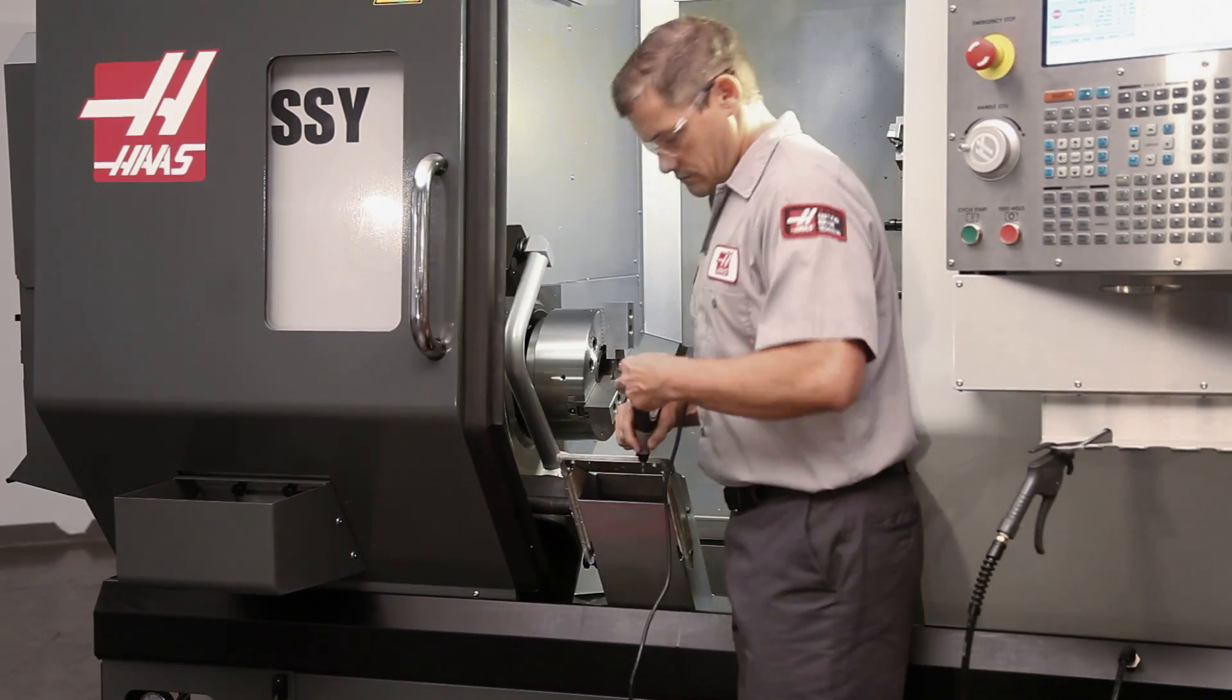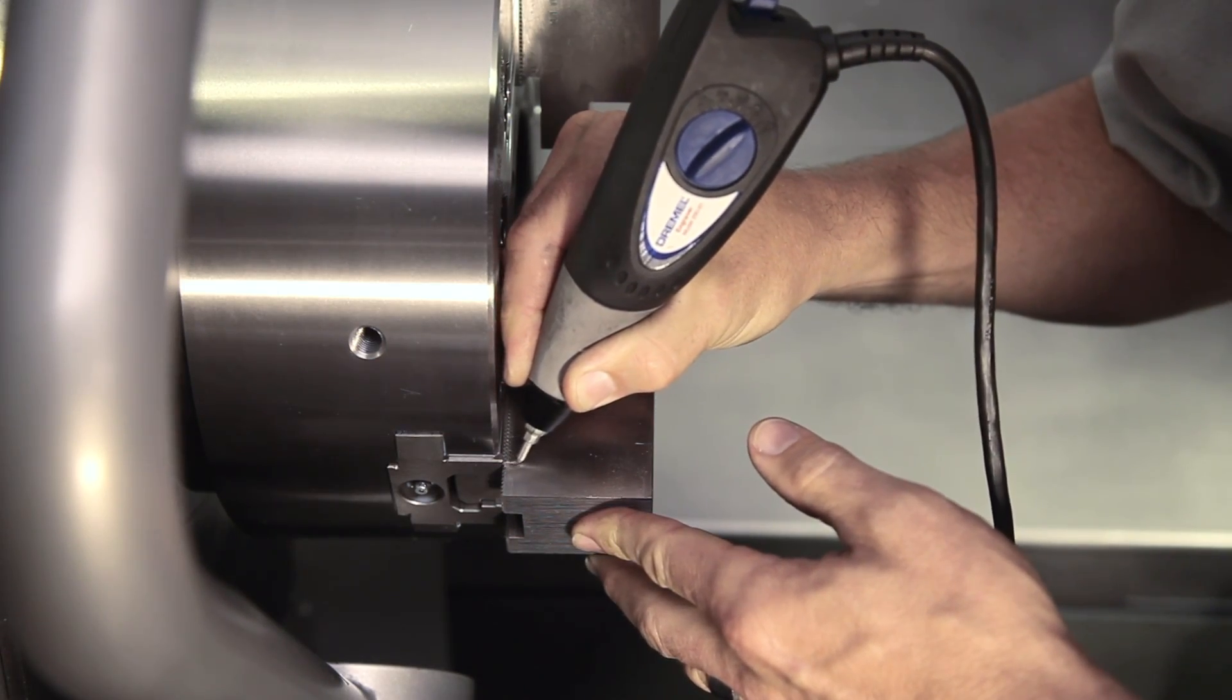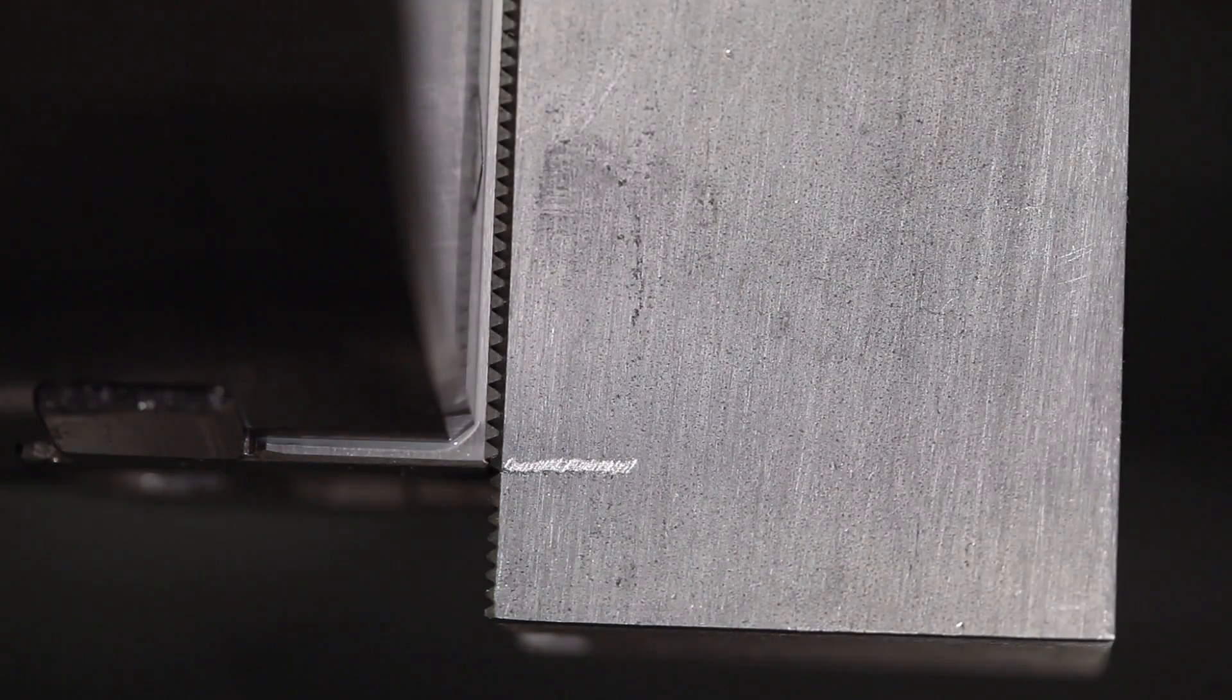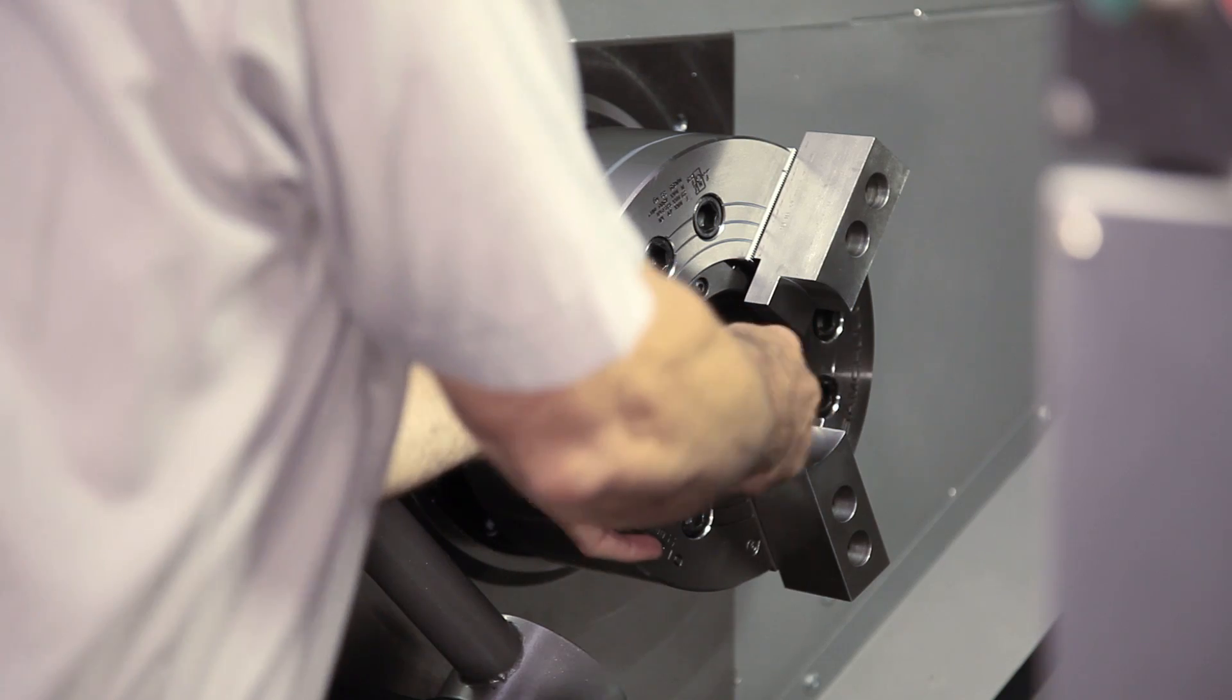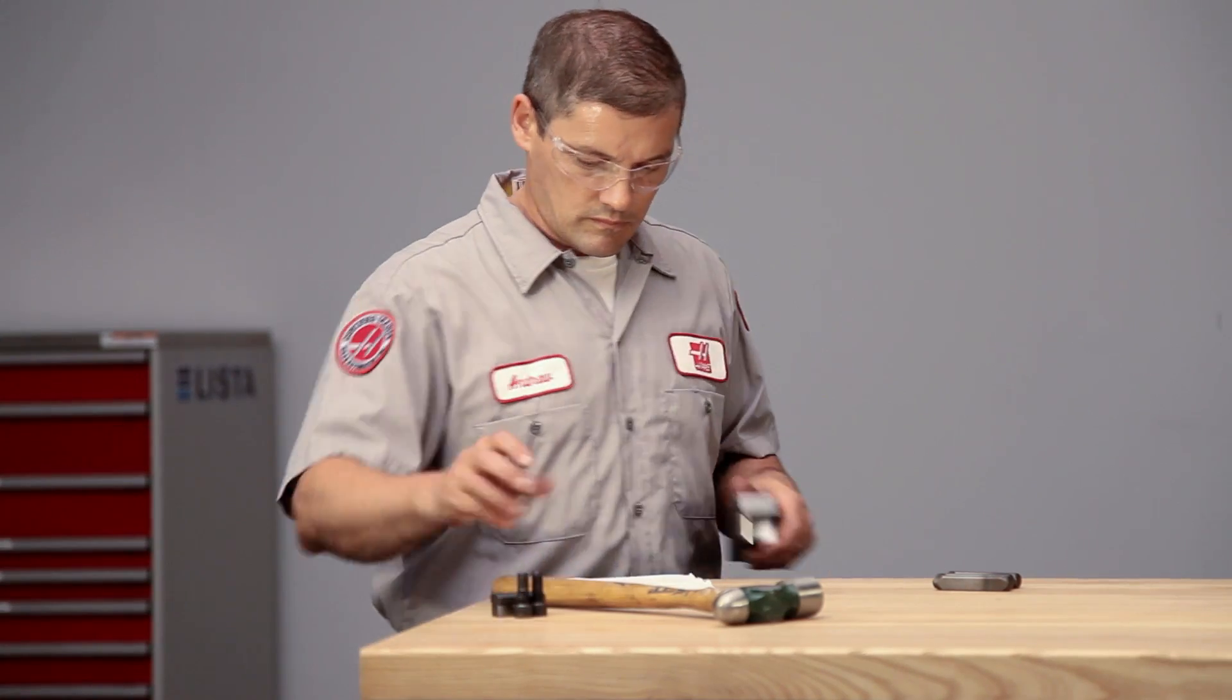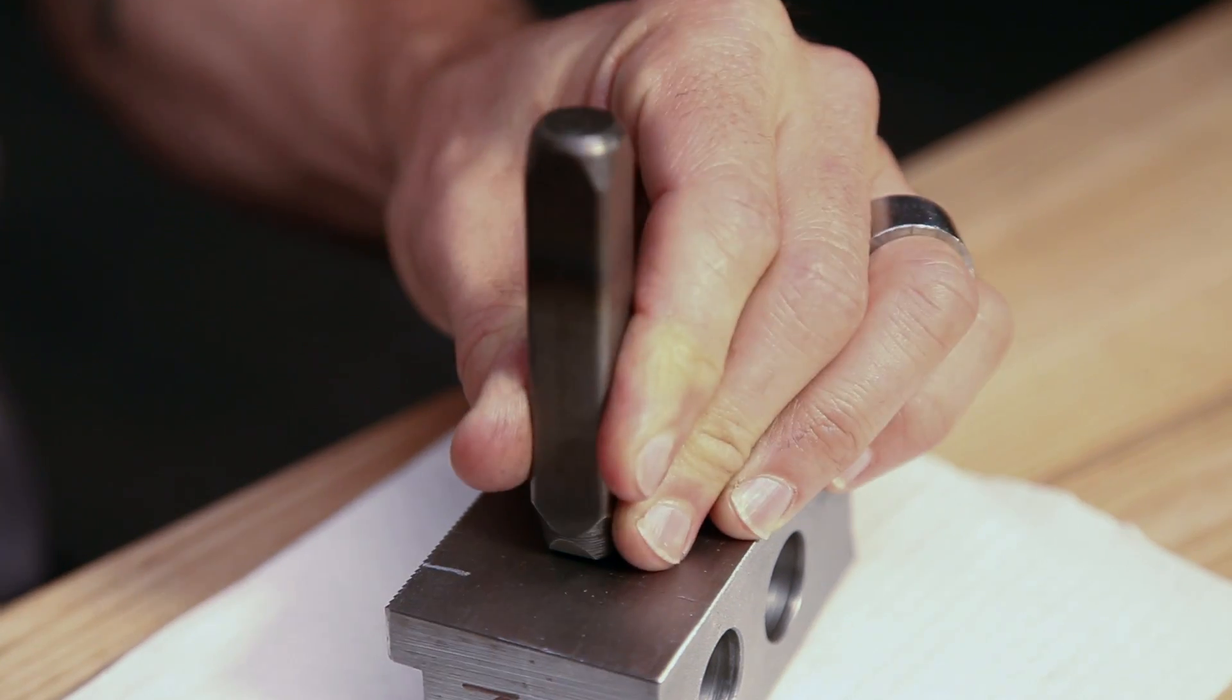Before disassembly, he finds a mark or feature on the master jaw and scribes a line on the soft jaws to locate them at this exact tooth position in the future. Then, as he removes each jaw, he numbers it to match the number of the corresponding master jaw on the chuck.